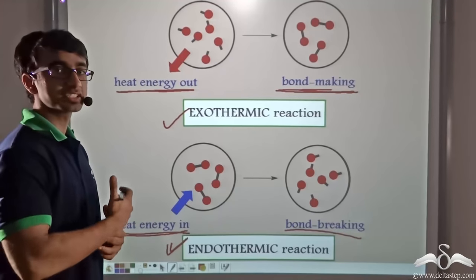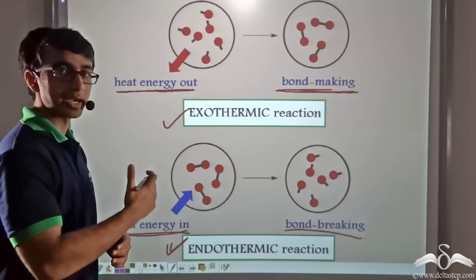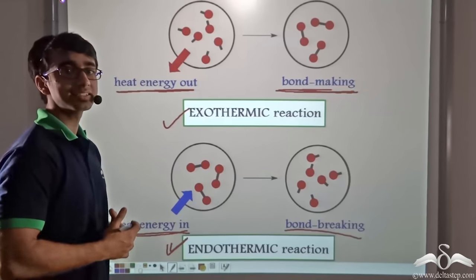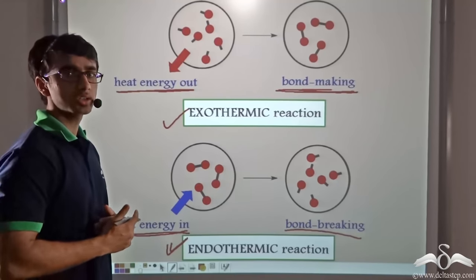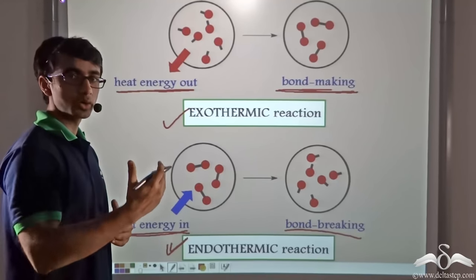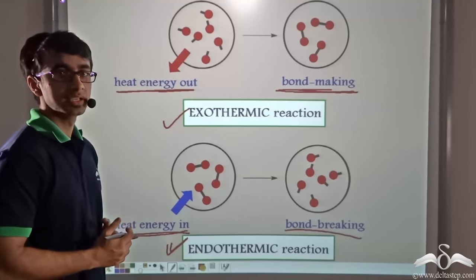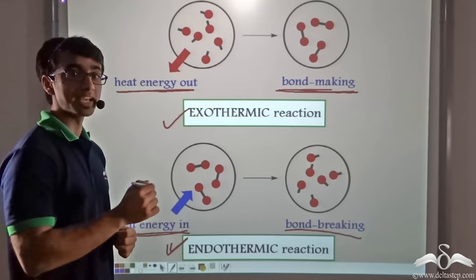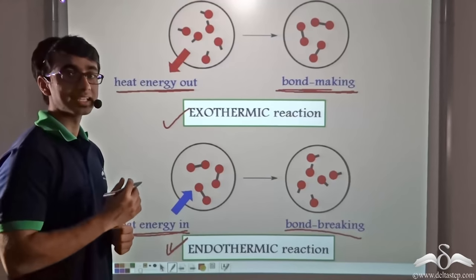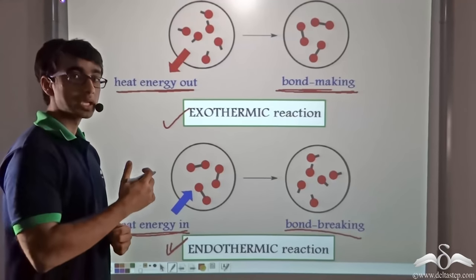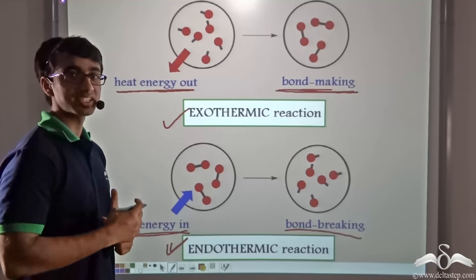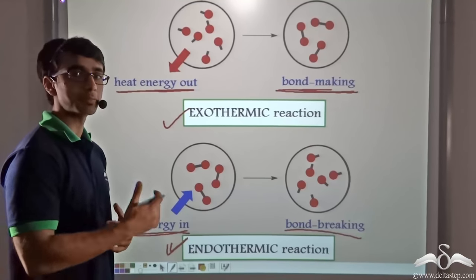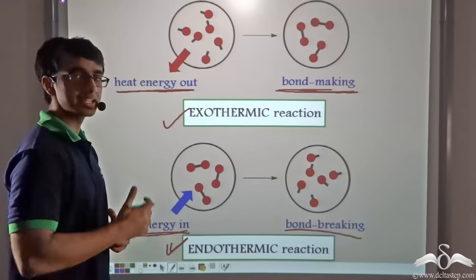So just like in changes of states of matter, even in chemical reactions there is an exchange of heat — a going out or coming in of heat. Now this heat that is being exchanged can be scientifically measured and given a value. We are going to find out how we can measure the heat involved in a change of state of matter or even in a reaction.